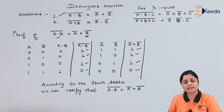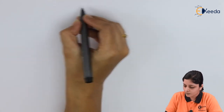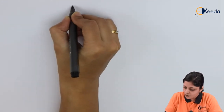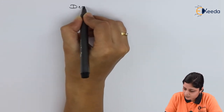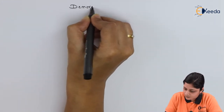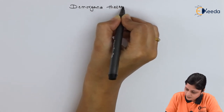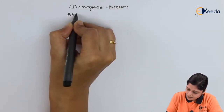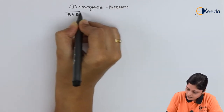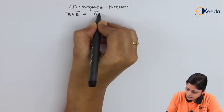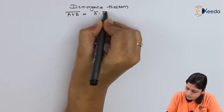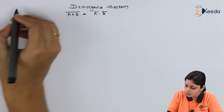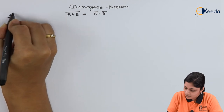Now we will discuss the second theorem. The second theorem states that the complement of A plus B equals A-bar dot B-bar. This is the statement of the second De Morgan's theorem.